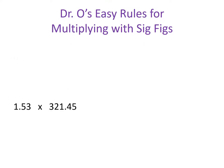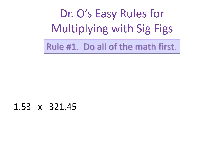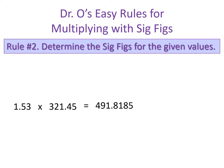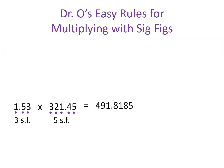Here we have a problem where there's a difference between the significant digits of our two given values. Let's apply our three rules. Rule number one: do the math first — our product is 491.8185. Rule number two: determine the significant figures. Our first value, 1.53, has three significant figures, and our second value has five significant figures.